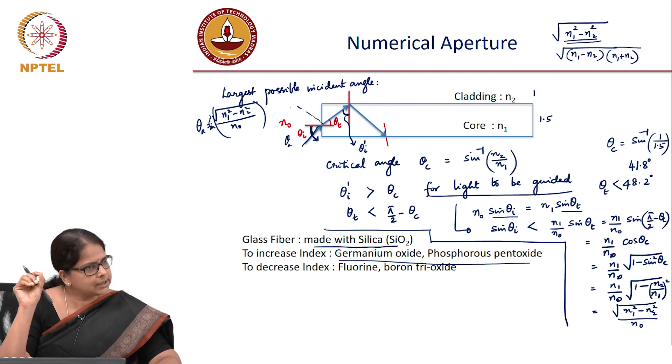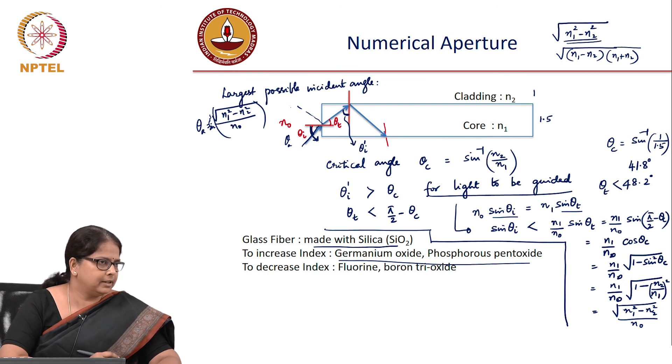These days, pure fused silica is available, where the core is just silica with no dopant. Later in class, I'll ask why that would be preferred. Pure silica fibers have undoped silica cores, with doping only in the cladding to reduce refractive index.